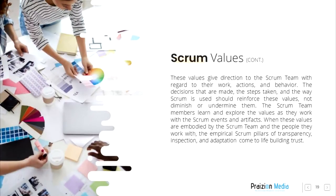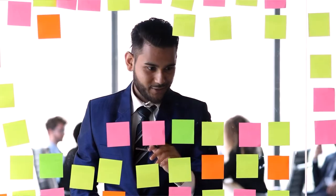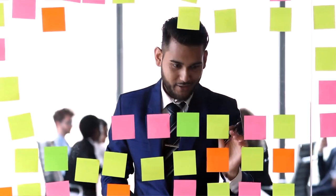These values give direction to the Scrum Team with regard to their work, actions, and behavior. The decisions that are made, the steps taken, and the way Scrum is used should reinforce these values, not diminish or undermine them. The Scrum Team members learn and explore the values as they work with the Scrum events and artifacts. When these values are embodied by the Scrum Team and the people they work with, the empirical Scrum pillars of transparency, inspection, and adaptation come to life, building trust.